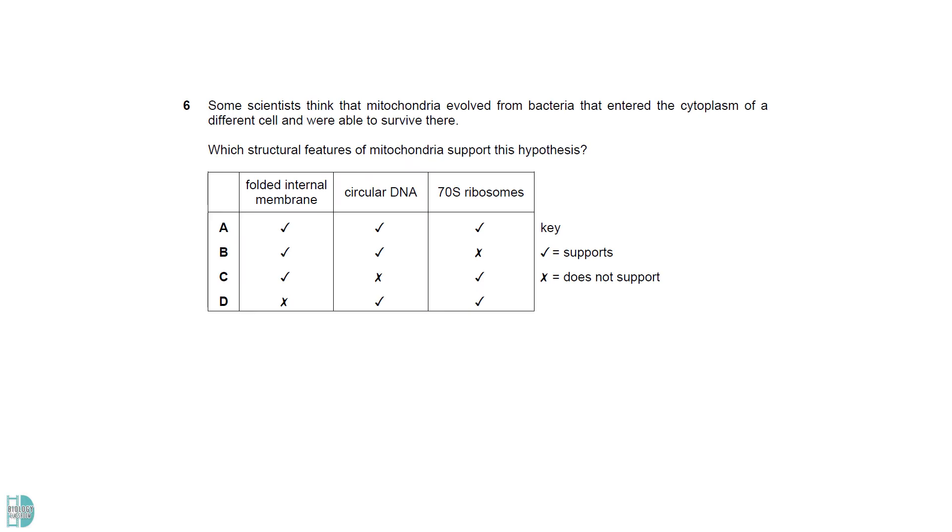Scientists think that mitochondria evolved from bacteria due to the common features they share. They both have circular DNA and 70S ribosomes. The folded internal membrane of mitochondria has nothing to do with the hypothesis.